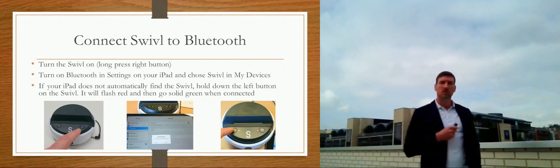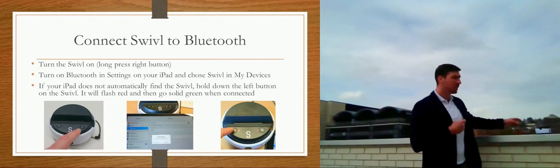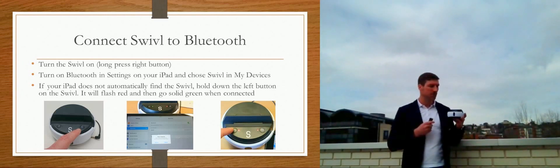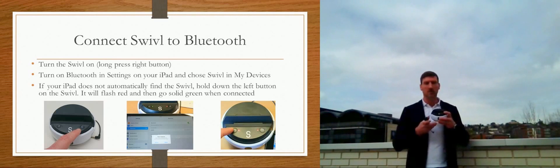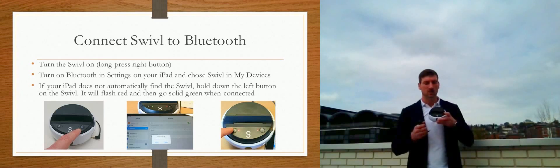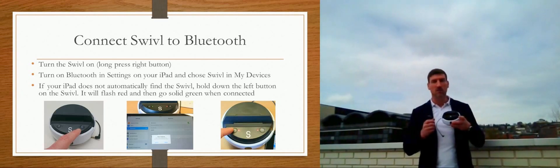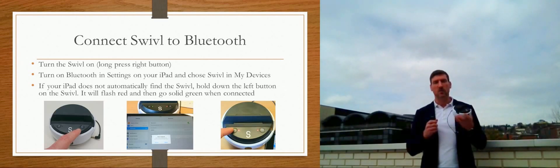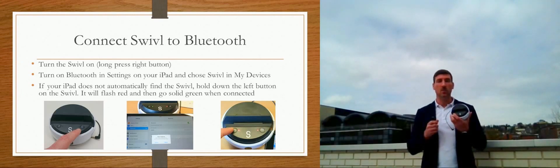So, now let's talk about the actual Swivel itself. The unit doesn't do any recording, so you need the iPad to do the recording itself. All it does is basically track you. The unit can be turned on just by pressing the button to the right — a long press of about five seconds — and the unit will come on. You'll know it's on because the red light comes on and it moves up and down. You'll need to connect it to Bluetooth, so turn Bluetooth on on your iPad, search for Swivel, and make that connection. Once it's connected, the button on the left will go green.